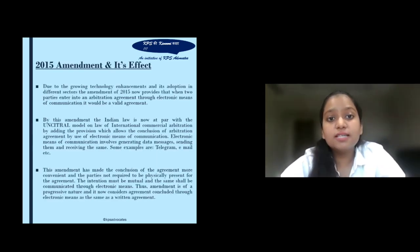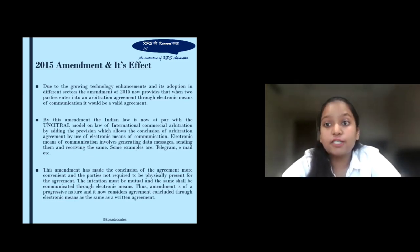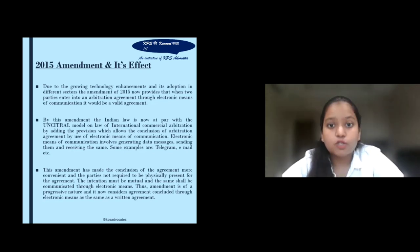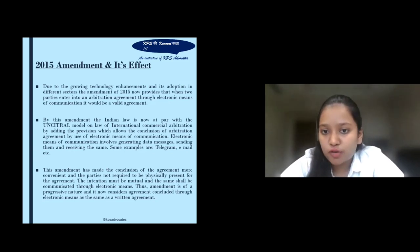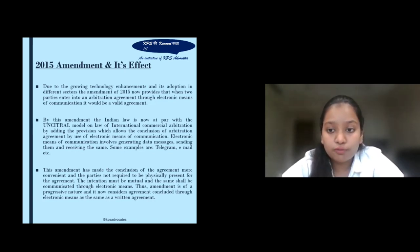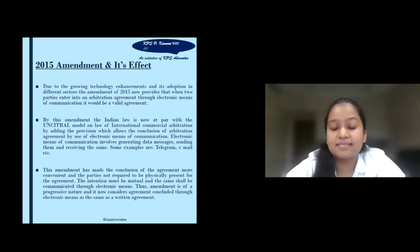There was an amendment to this Act in 2015. Due to growing technological enhancements and their adoption in different sectors, the amendment of 2015 provides for parties to conclude their agreement through electronic means of communication, and this will be considered a valid agreement. Some examples of electronic means of communication include telegram and email. This amendment has made the conclusion of agreements more convenient, as parties are now not required to be physically present, and conclusion through electronic means will be given the same importance as a written agreement.